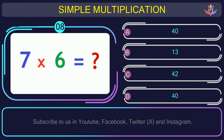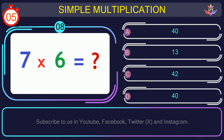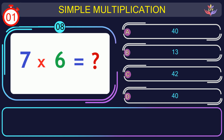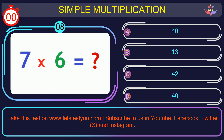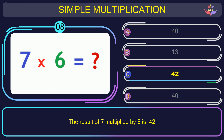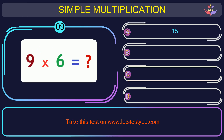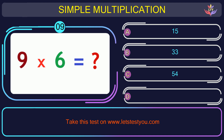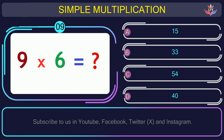Question number 8: if you multiply 7 by 6, what is the result? The correct answer is option C: 42. The result of 7 multiplied by 6 is 42.